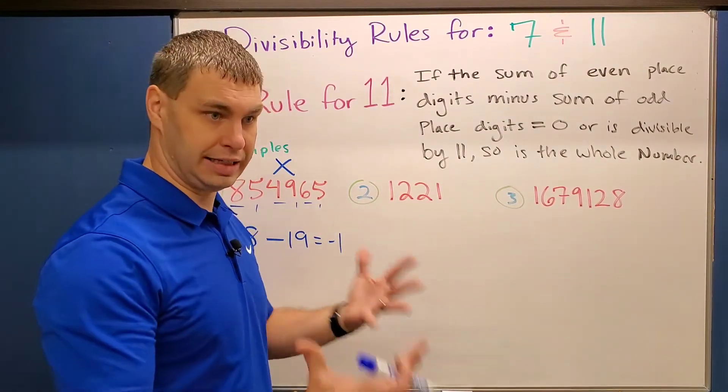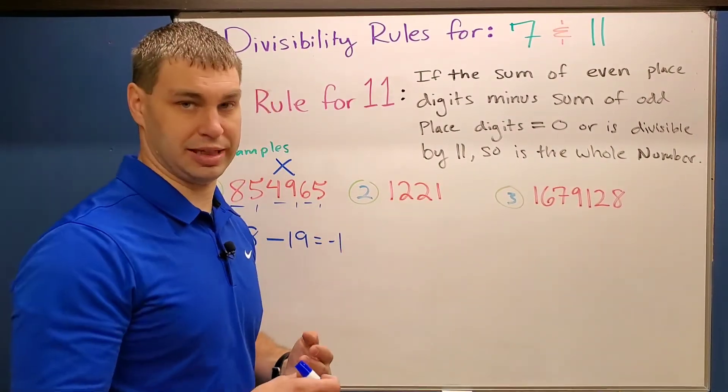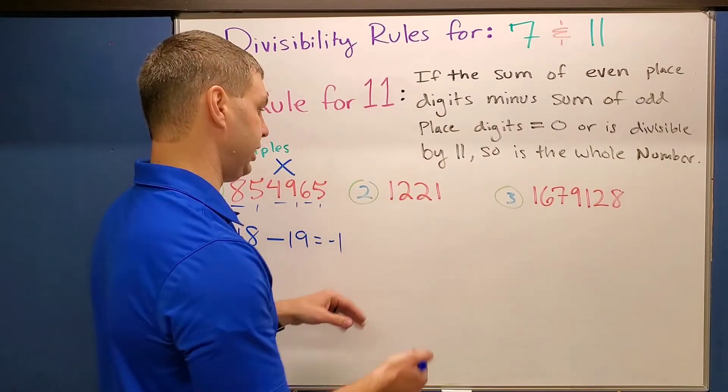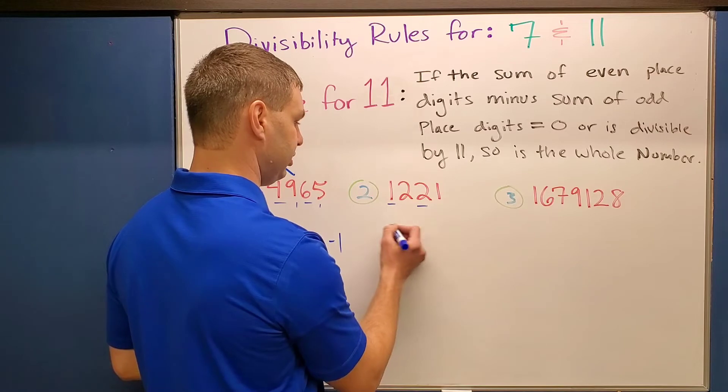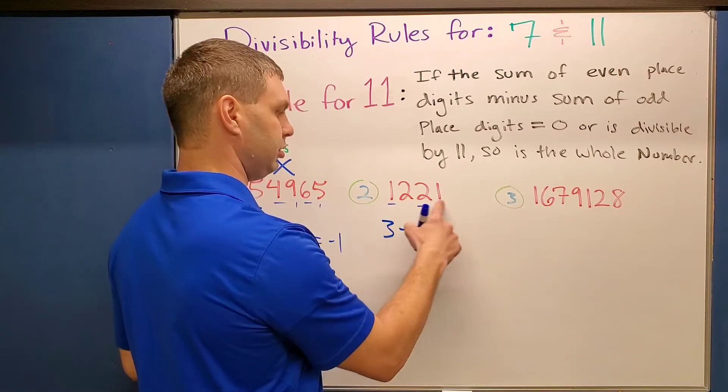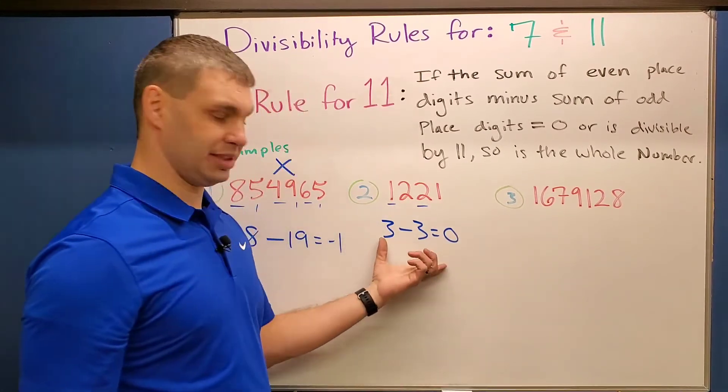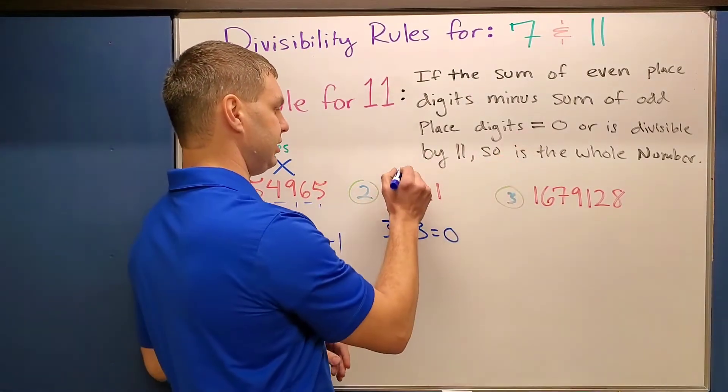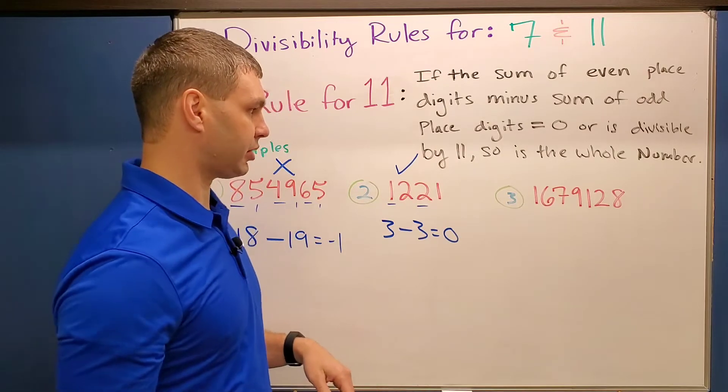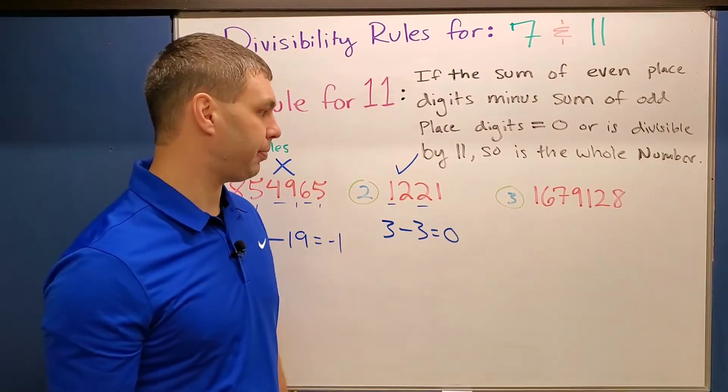What about this one? This is one that I know already is divisible by 11. Let's see if the rule works for it, okay? So here, if I add up the even places, 1 plus 2 is 3, minus 2 plus 1 is also 3. Well, this gives me a 0. So since that ends, or since it equals 0, then that is part of the rule that says this will equal, or is divisible by 11, I should say.